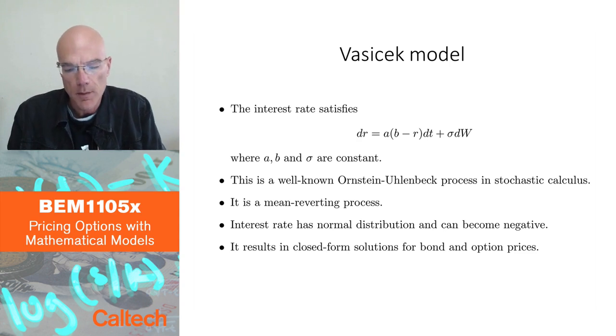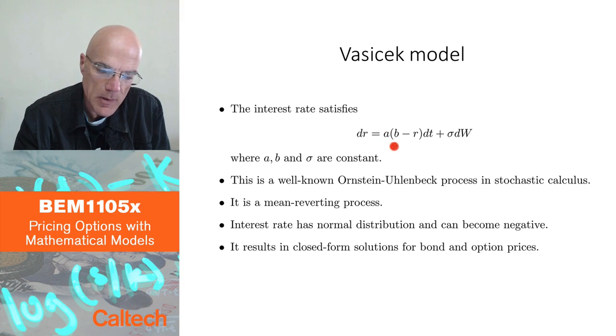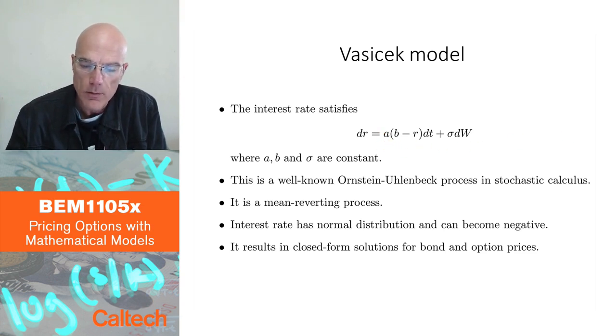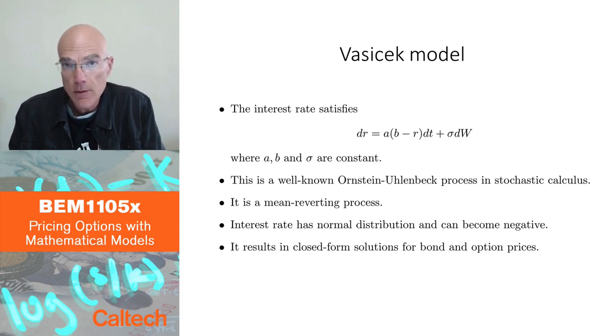So b has that interpretation of the long-term mean, and a has the interpretation of the speed of mean reversion. Higher a means faster you revert back to the mean. So that's good.